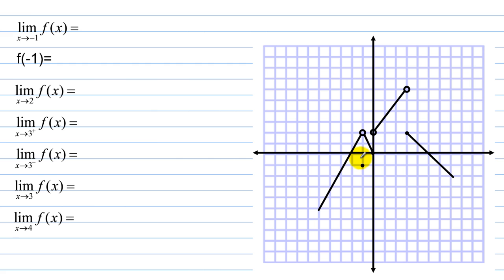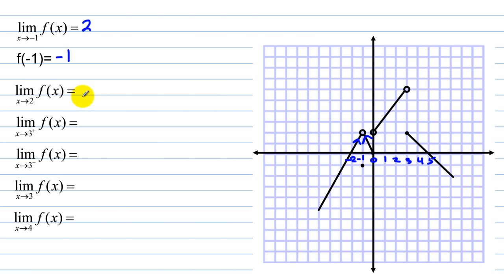Let's look at some graphs. We find the limit as x approaches negative 1 of f(x): from the left the value is 2, and from the right the value is also 2, so the limit is 2. However, the function value f(negative 1) is where the solid dot is, which is negative 1 — so the limit does not equal the function value. The limit as x approaches 2 of f(x) appears to be approximately 5 — let's call it 5 for the sake of argument.